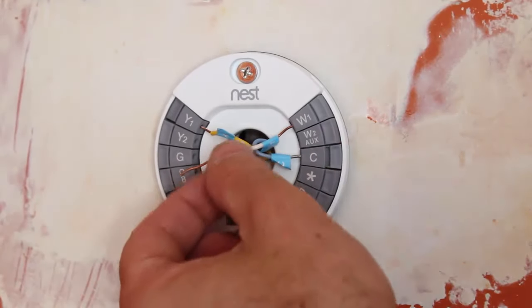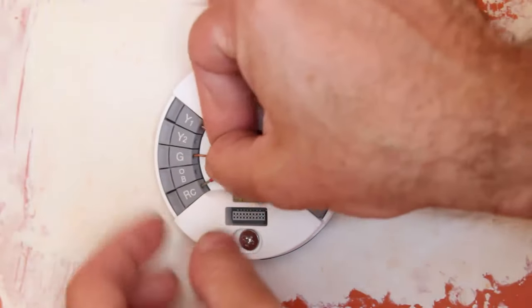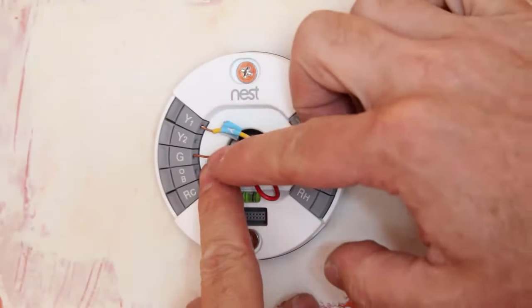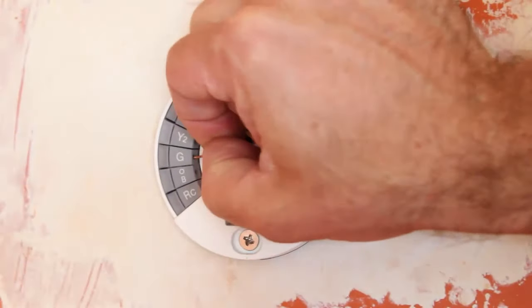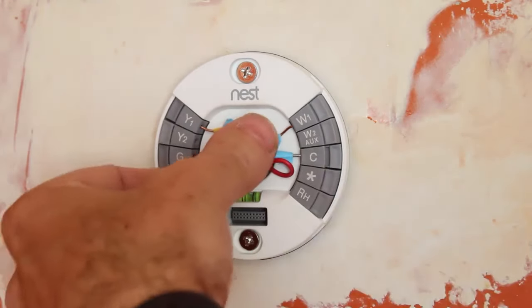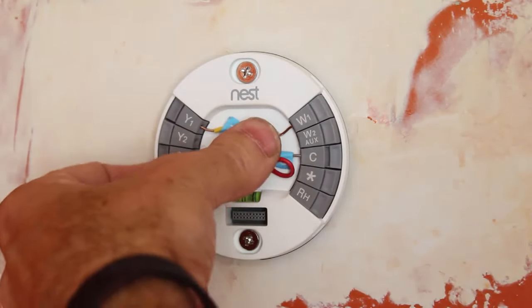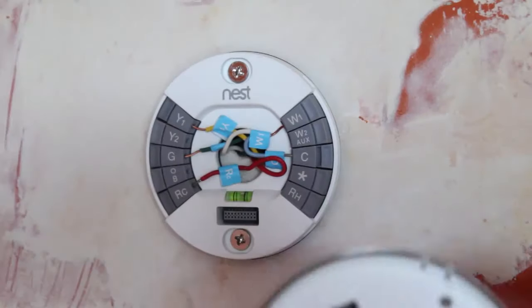So I put all the wires in, and I left the ground one in place. What I wanted to do is show you how easy this is. So you put it into the slot, you press on the button, and you shove the wire in, and that's it. That's all you need to do to wire the Nest. And you push the wires in place. Try to push them so that they're flush with the back of this plate.